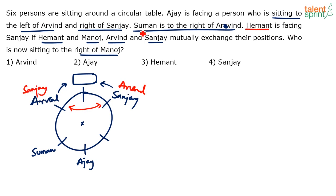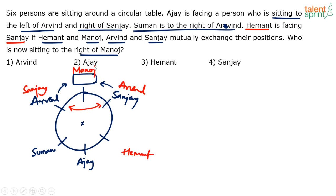After exchanging, Hemant is facing Sanjay — shown in the red-colored positions. Hemant exchanges his position with Manoj, and after the exchange Hemant faces Sanjay. The only remaining position is for Manoj. So the red positions represent the exchanged arrangement: Manoj and Hemant have swapped, and Arvind and Sanjay have swapped. Suman and Ajay are fixed with no change. Hemant is facing Sanjay in the red case.